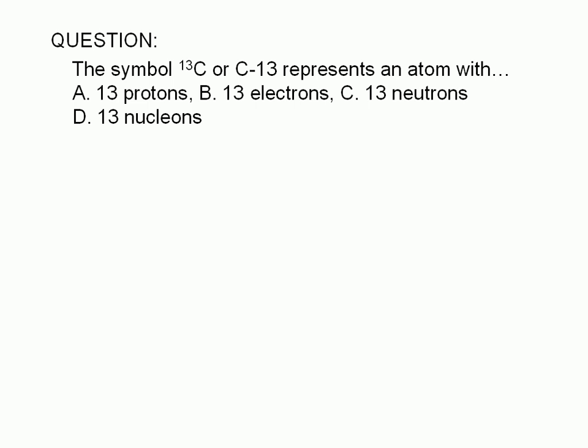The symbol C, with 13 written as a superscript before it, or with dash-13 written after it, represents an atom with: A, 13 protons; B, 13 electrons; C, 13 neutrons; or D, 13 nucleons.